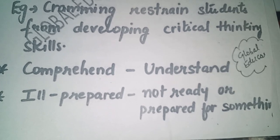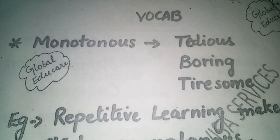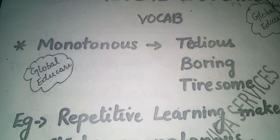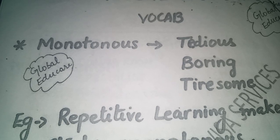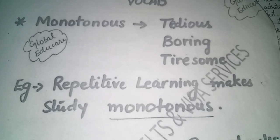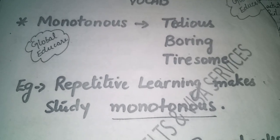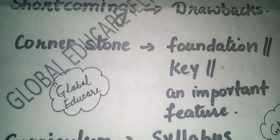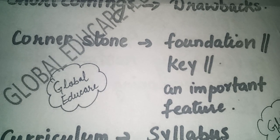Monotony means boring, tedious, tiresome. A monotonous routine means a boring routine. For example: repetitive learning makes study monotonous, means boring. Other useful words: shortcomings, drawbacks, cornerstone, foundation, key feature.